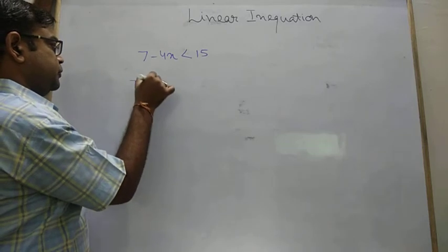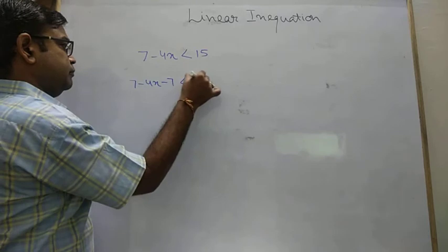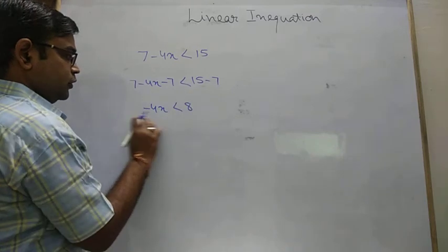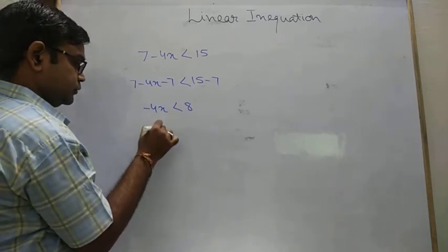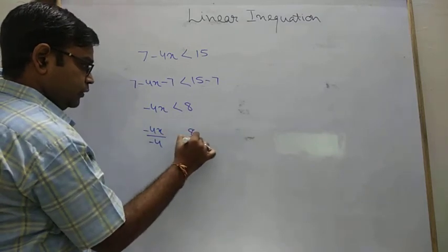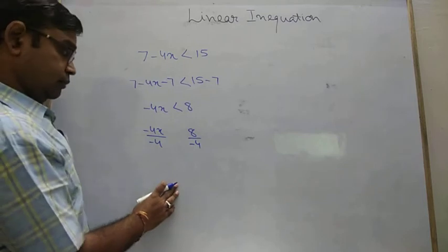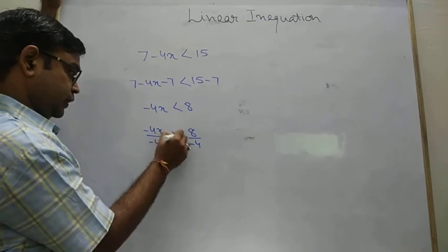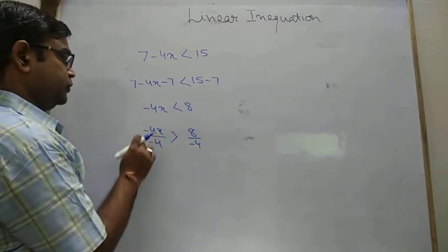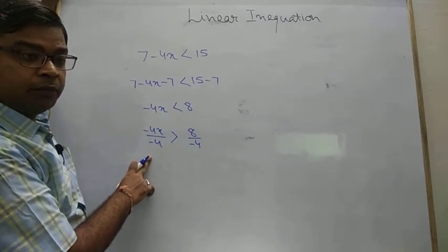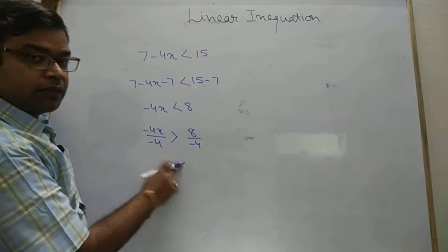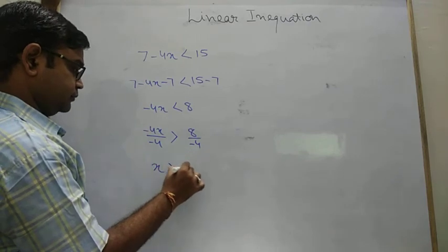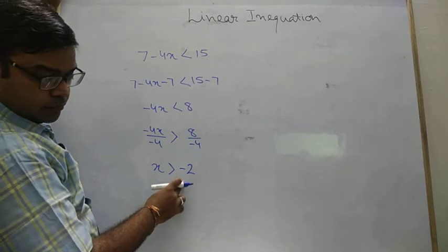Let's try. So 7 minus 4x minus 7, 15 minus 7. Ultimately what we have minus 4x is less than 8. Now we divide both side by minus 4. If we are dividing or multiplying by any negative numbers, be careful need not to fill this sign first. First place it. And then after all reverse the sign. Because we know that whenever an equation is multiplied or divided by negative number, both side by same negative numbers, then we change the sign. So what we have? We have x greater than minus 2.